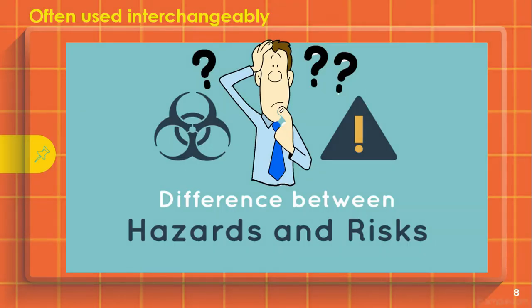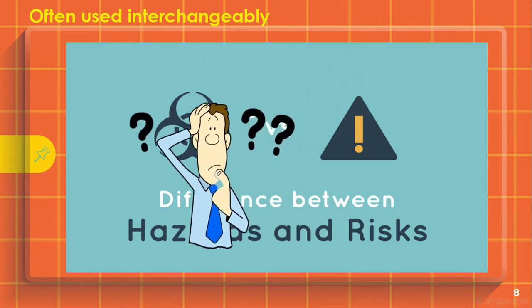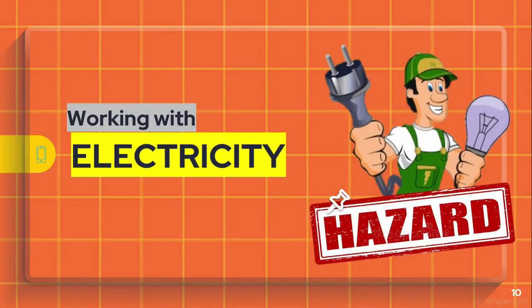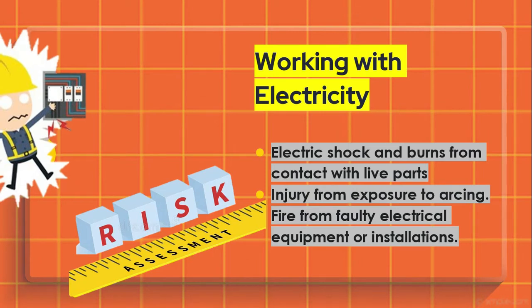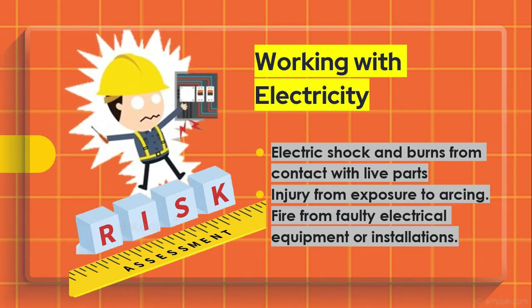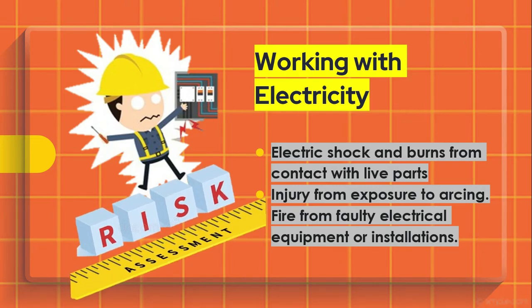The terms hazard and risk are often used interchangeably, but this simple example explains the difference between the two. Working with electricity might cause electric shock and burns from contact with live parts, injury from exposure to arcing, and fire from faulty electrical equipment or installations. The shock or other injury caused directly or indirectly by electricity is the risk.